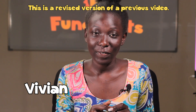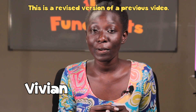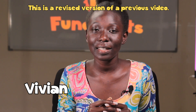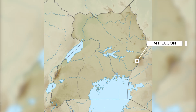Mountains are raised pieces of land, sometimes stretching for a few kilometers forming a single mountain such as Mount Elgon, while other times stretching for a lot of kilometers forming a mountain range such as Mount Renzori, which stretches for about 120 kilometers covering some parts of the Uganda border.